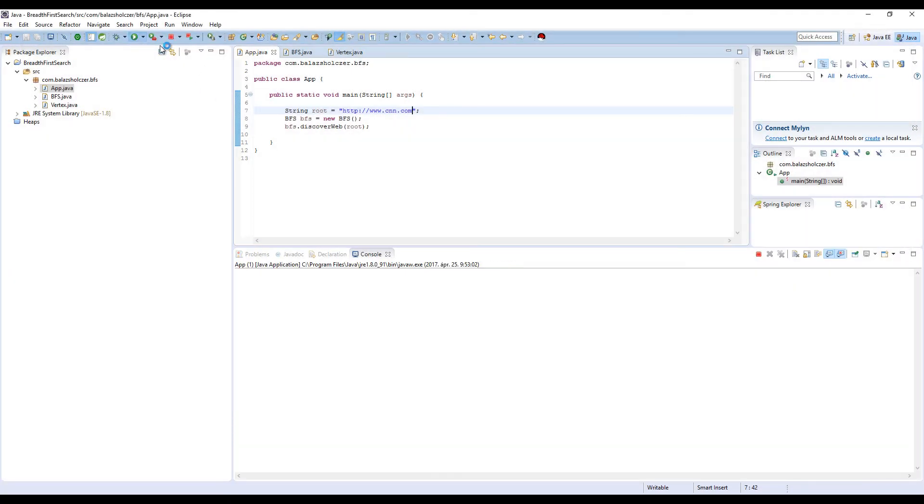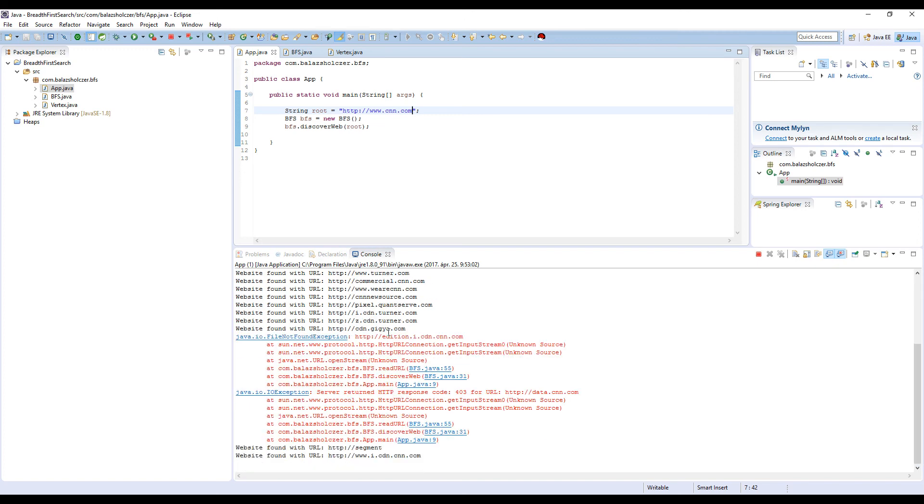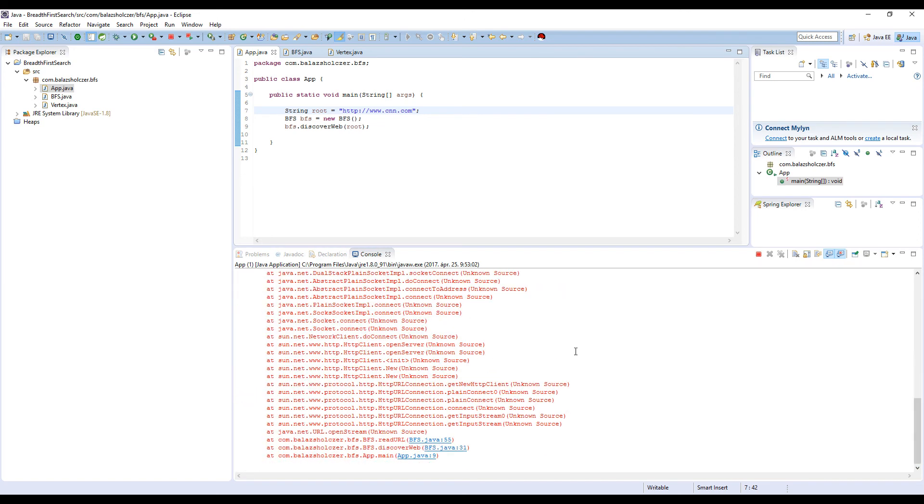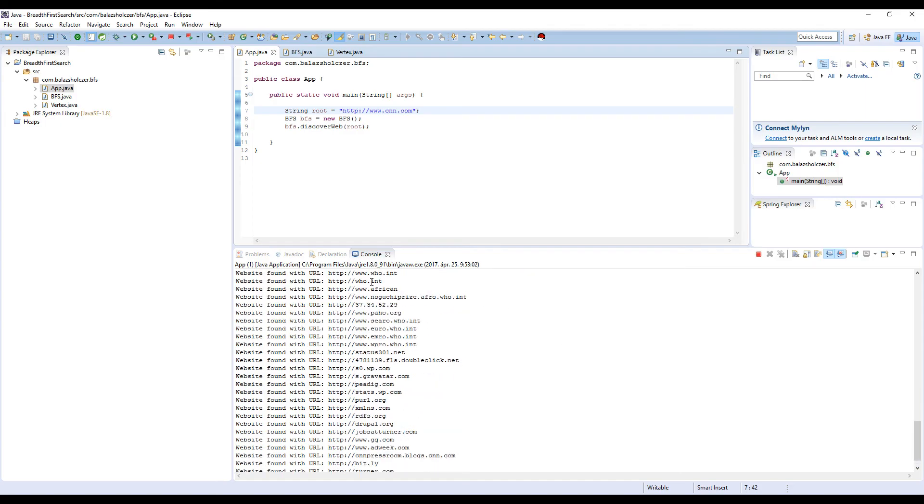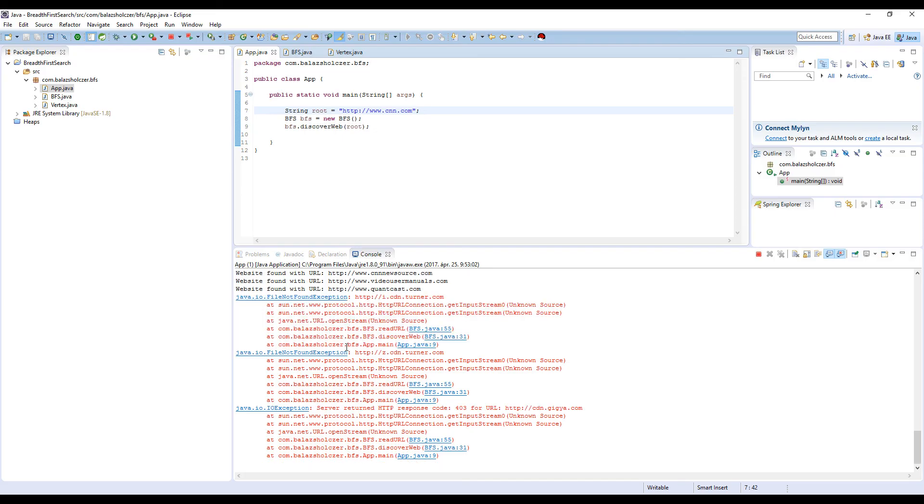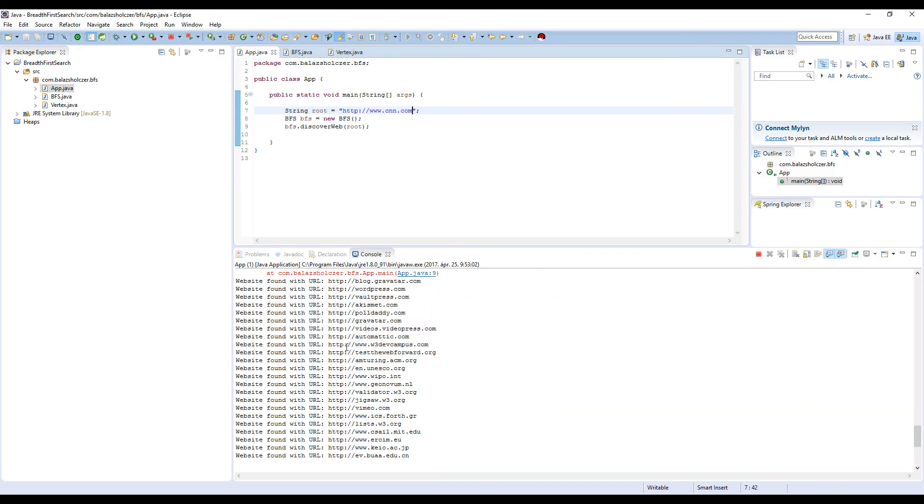So if we run it, of course there may be several errors in the sense that a given URL is not available or not responding. But as you can see, we're able to crawl the web and get a good grasp about the topology of the web starting from CNN.com.